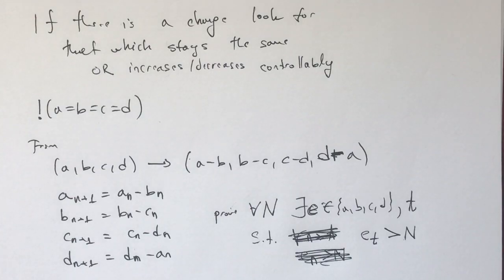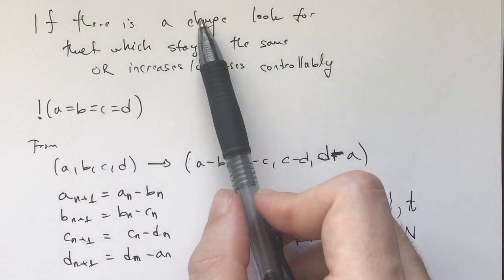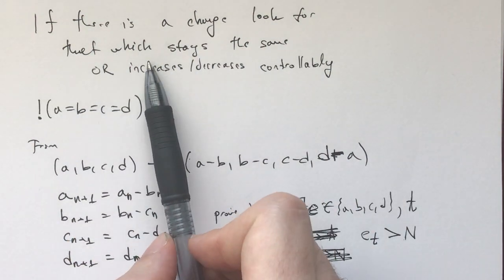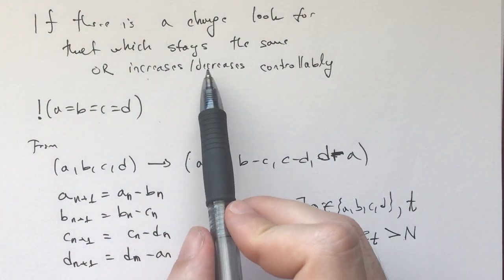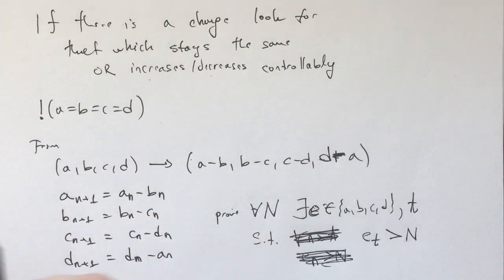Let's repeat what invariance is, the principle of invariance. If there is a change, look for things which stay the same, or this is the more advanced version of invariance, monovariance, or things that increase or decrease controllably. And now, what is the problem?